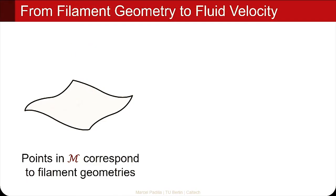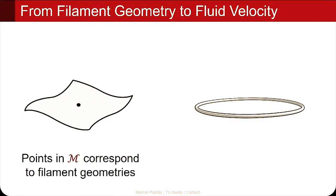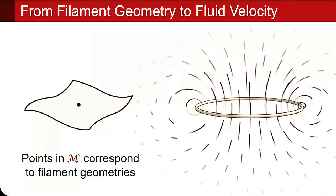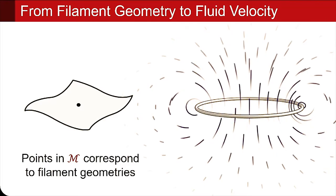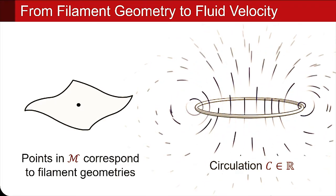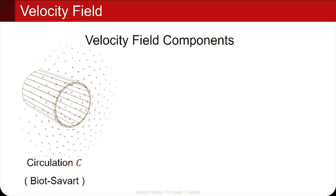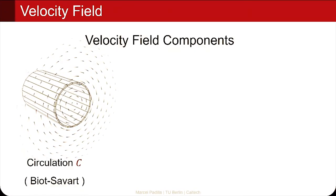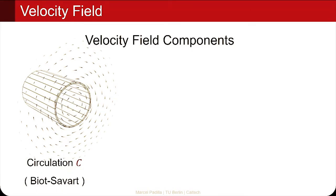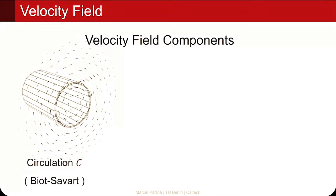We haven't talked about the strength of vorticity yet. For fluid dynamics, we have to describe how much vorticity is concentrated in these vortex filaments. For that we have an extra parameter called the circulation — at the moment just a constant number C given to each filament. We see here the velocity field induced by the given vorticity in that curve. This is the so-called Biot-Savart field given by the circulation, which you can imagine like a rigid core model rotating the vortex tube.